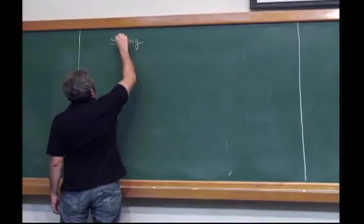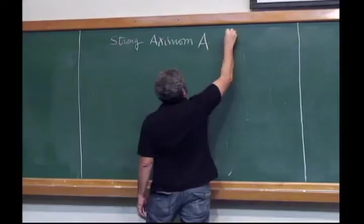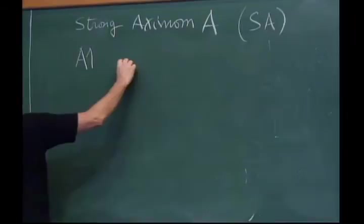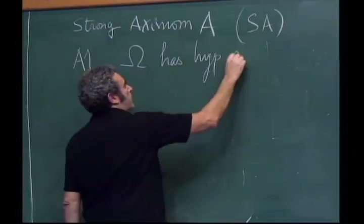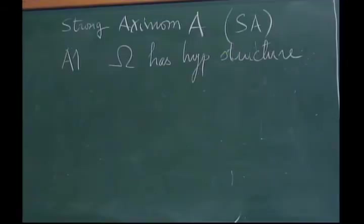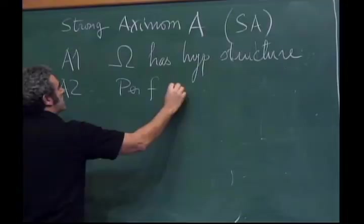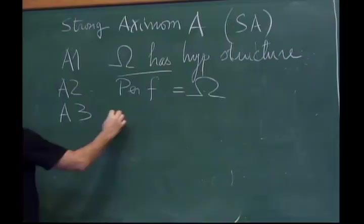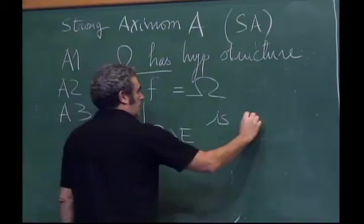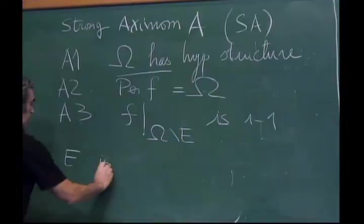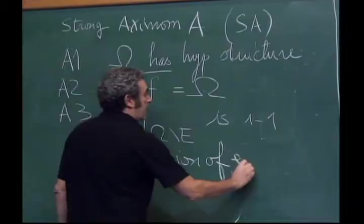Let me give the definition of Strong Axiom A. The non-wandering set omega has hyperbolic structure (A1); periodic points are dense (A2); and f restricted to omega minus E is one-to-one, where E is the union of expanding basic pieces (A3).